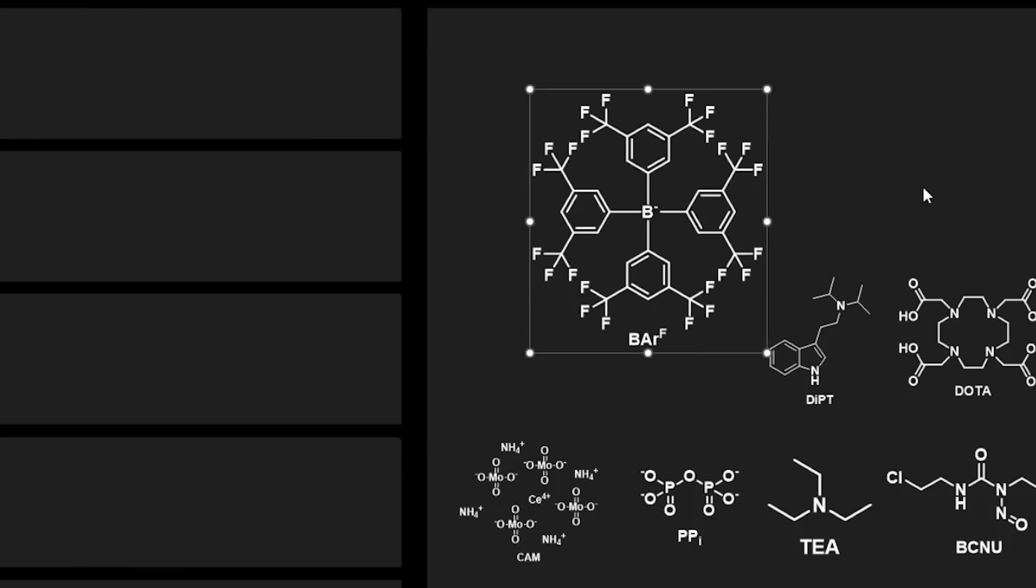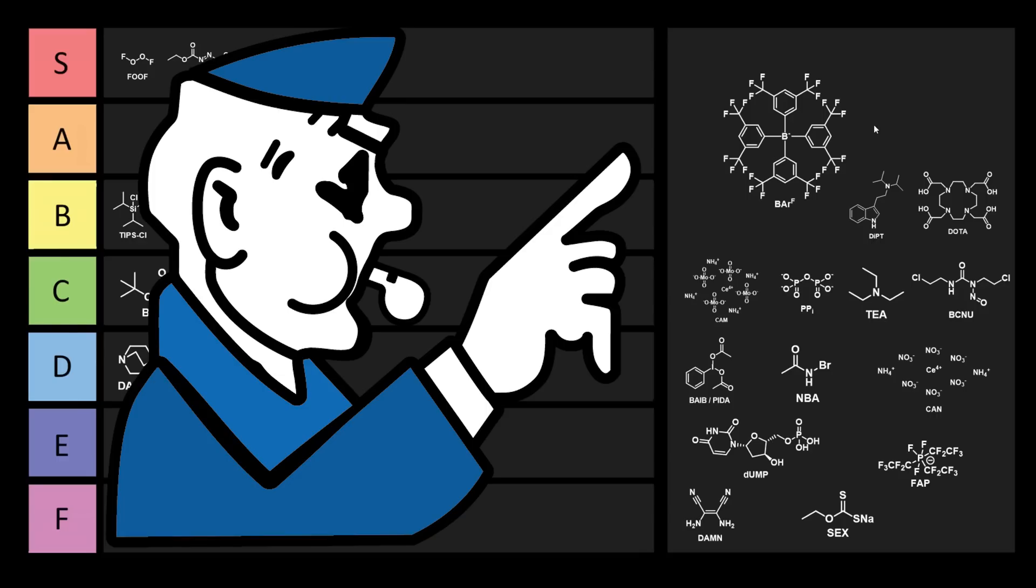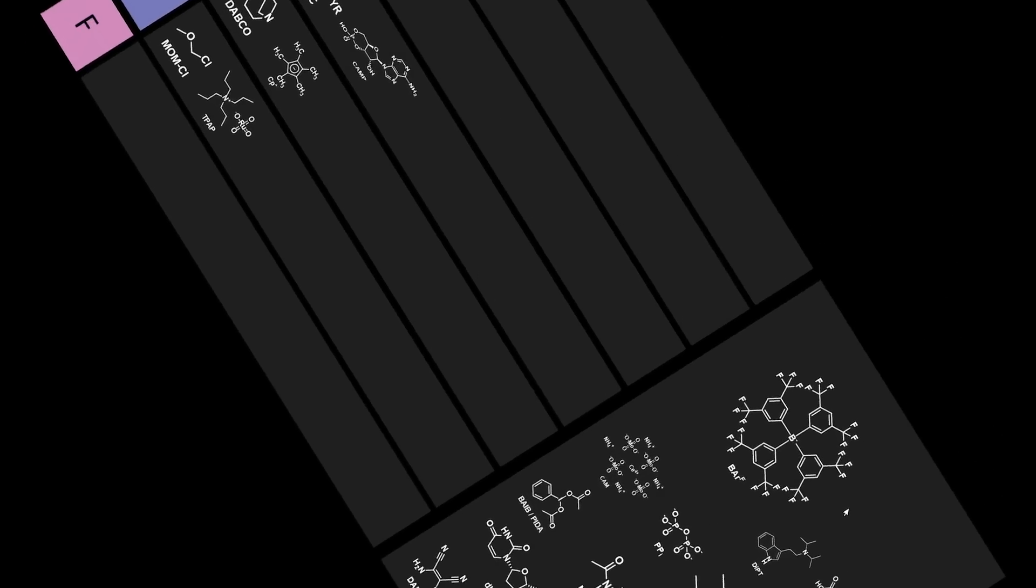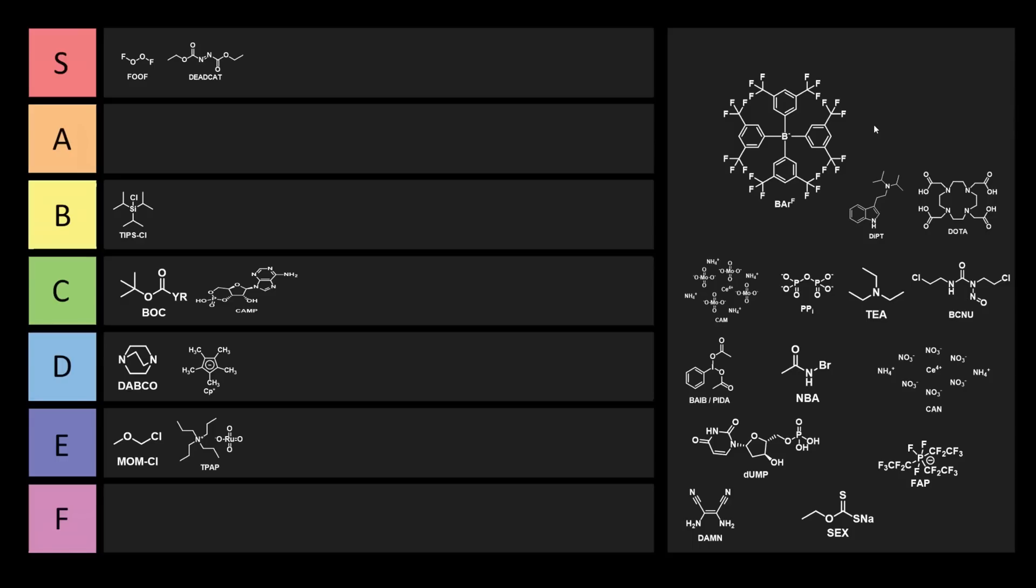Next we have BARF. This stands for tetrakis(3,5-bis(trifluoromethyl)phenyl)borate. Tetrakis means there's four of them. This is a good anion for salts because it's useful as a very weakly coordinating anion. Some people say non-coordinating, but this super triggers certain chemists. There's no such thing as non-coordinating - some part of the anion will still interact with the cation. So we can only say it's weakly coordinating. The effect is it makes the cation way more Lewis acidic, which makes it more electrophilic.